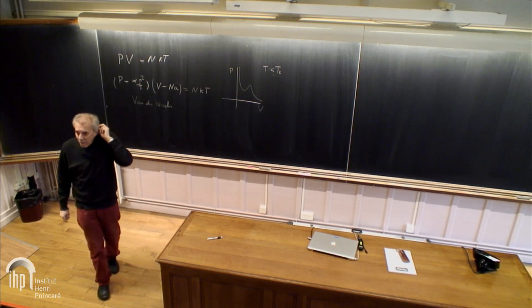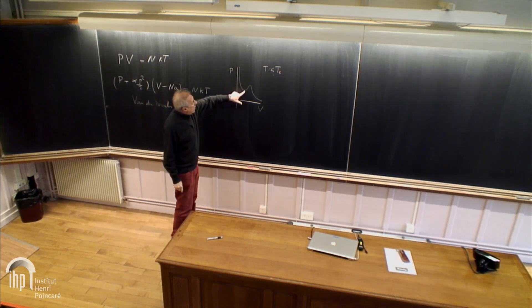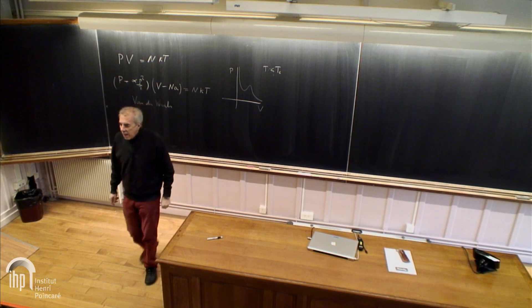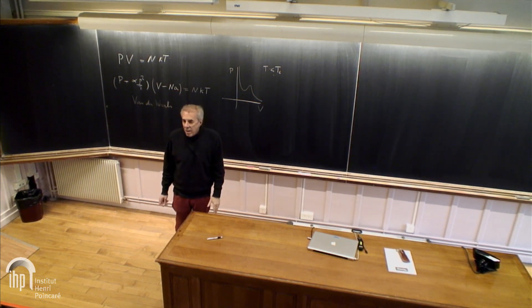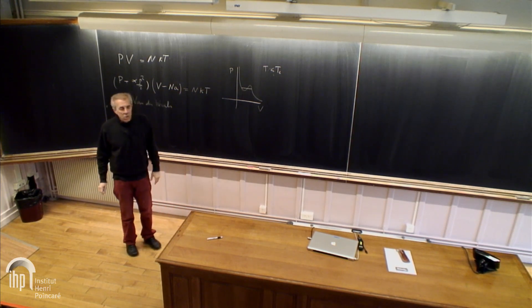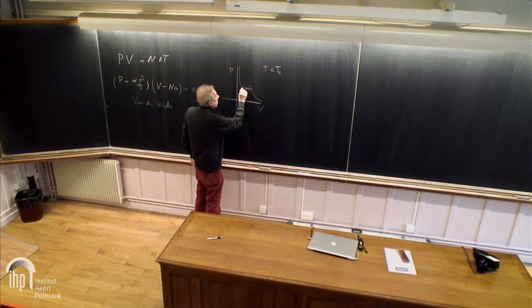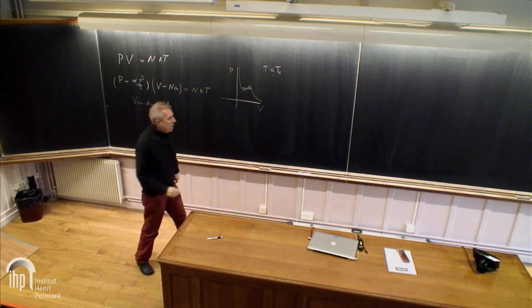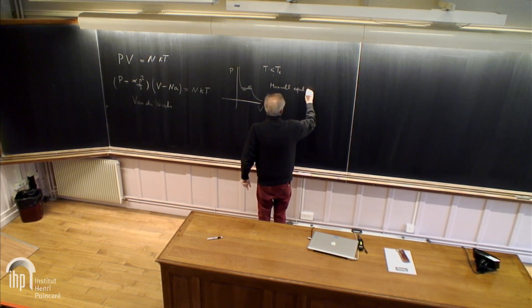It's not so nice, because a law of thermodynamics says that P cannot increase with V — it should always be decreasing. So this part of the Van der Waals curve is thermodynamically wrong. At the time, one had to fix it. The idea by Maxwell was to replace the non-monotone part with a horizontal line — the Maxwell equal area rule — placed so that the two areas are equal.